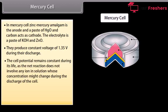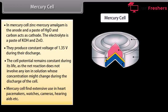The cell potential remains constant during its life as the net reaction does not involve any ion in solution whose concentration might change during the discharge of the cell. Mercury cell finds extensive use in heart pacemakers, watches, cameras, hearing aids, etc.